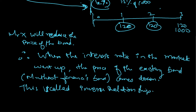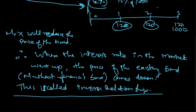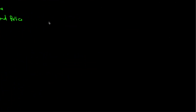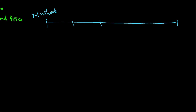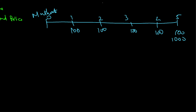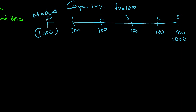Now let's take another example. Instead of interest rates going up, what if they come down? Again, here is the Motud Finance bond on a five-year timeline: every year you get 100, 100, 100, 100, 100, and then 1000 at maturity — 10% coupon on 1000 par value, issued at par. Now after two years, imagine the interest rate in the market comes down to, say, 7%.